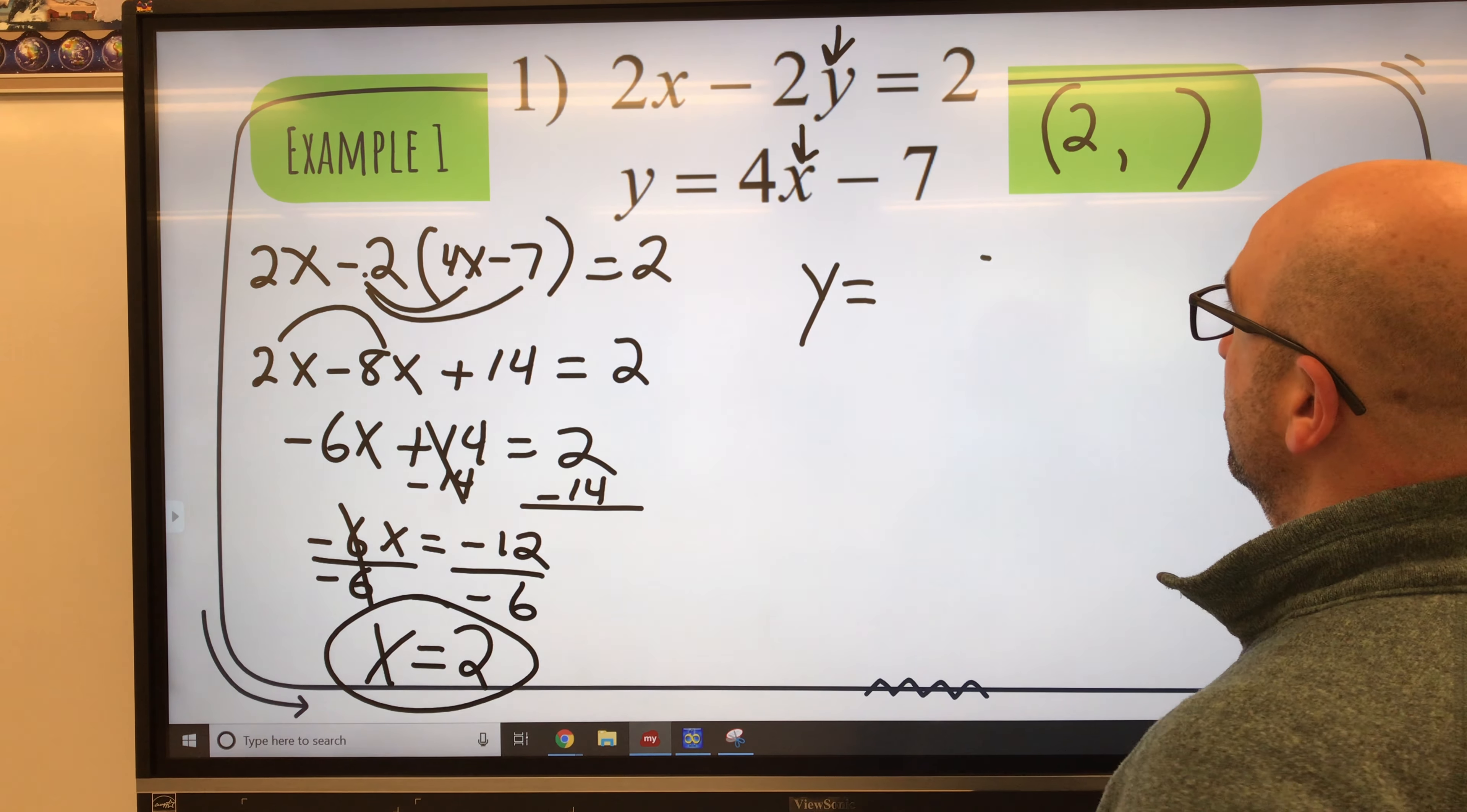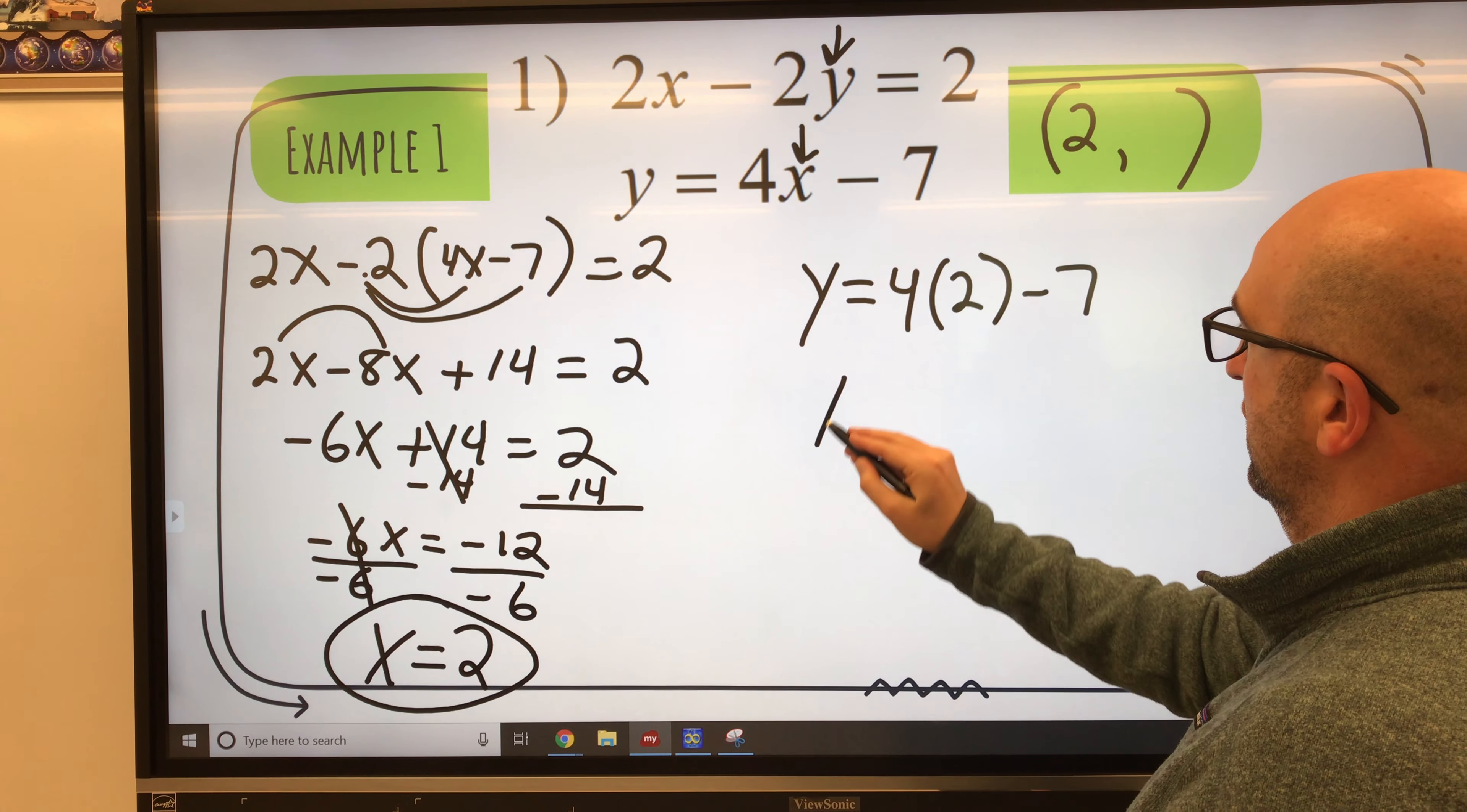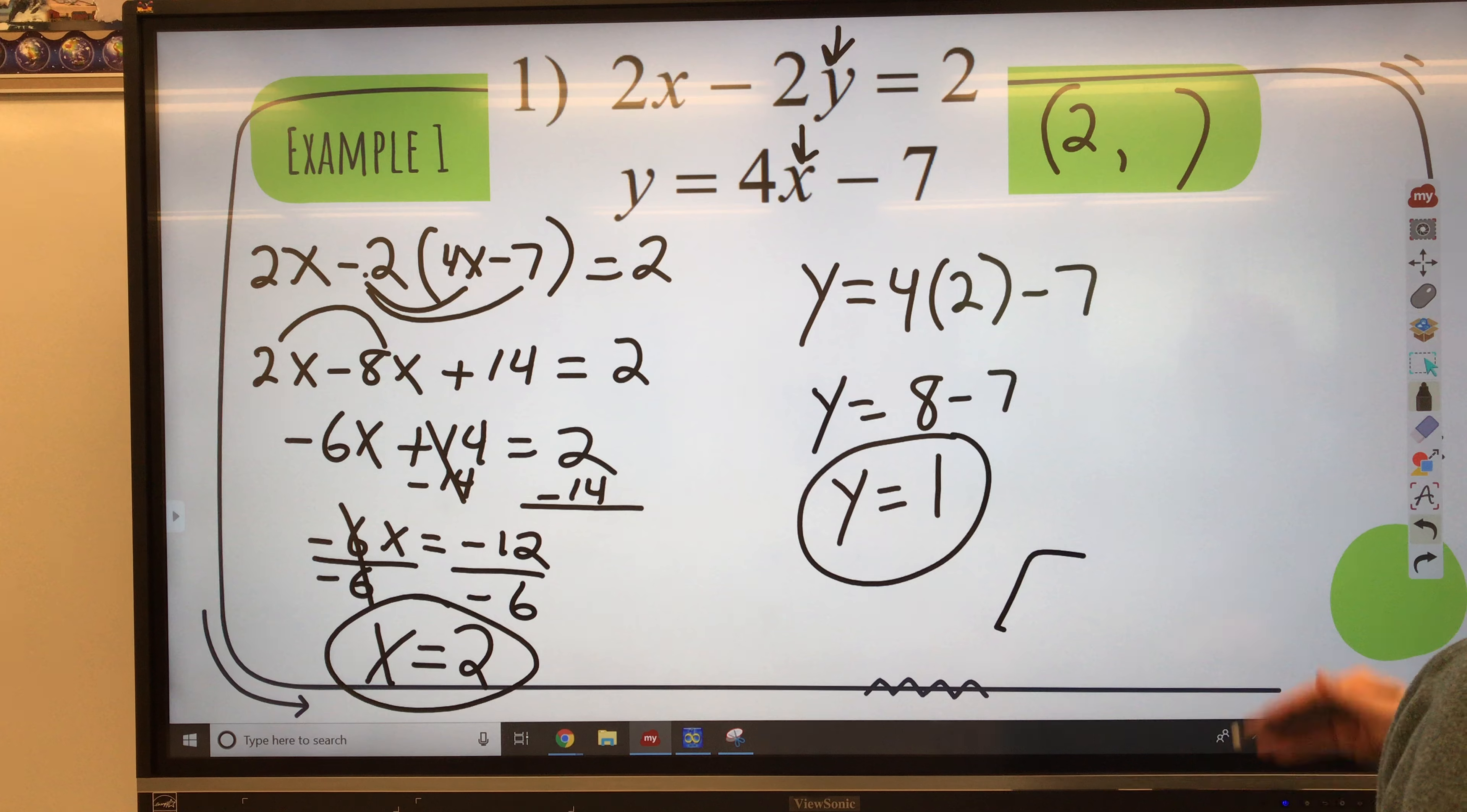So y equals 4 times, not x. I have found out what x is equal to. 4 times 2 minus 7. So y equals 4 times 2 is 8 minus 7. And then 8 minus 7 is 1. So y equals 1.